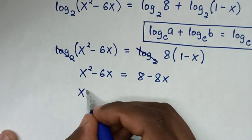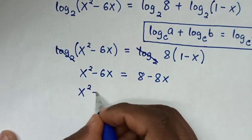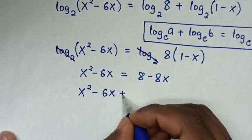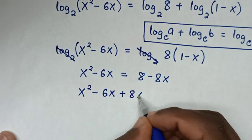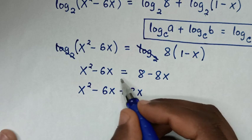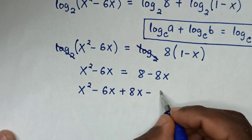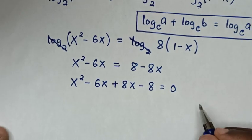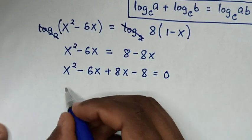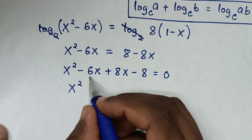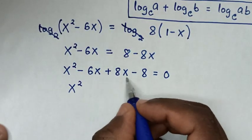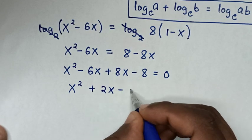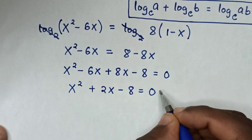Then it will be x² - 6x. We take negative 8x to the left side to become plus 8x, and we take 8 to the left side to become minus 8, equal to 0. So our equation will be x² + 2x - 8 = 0.